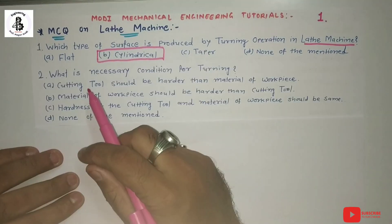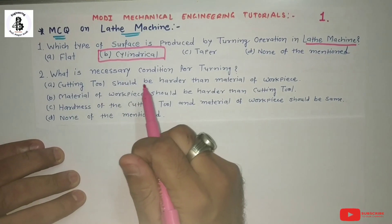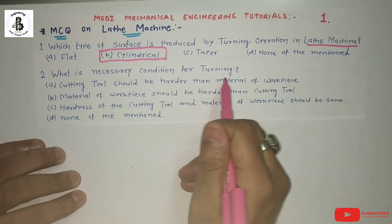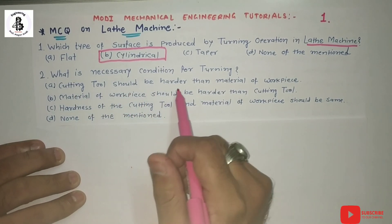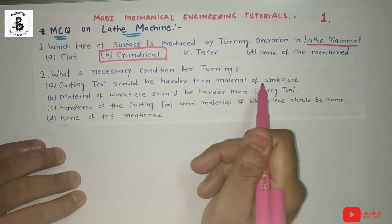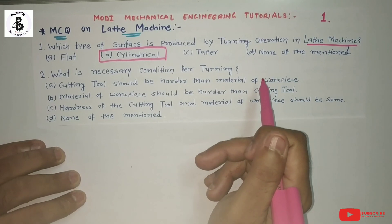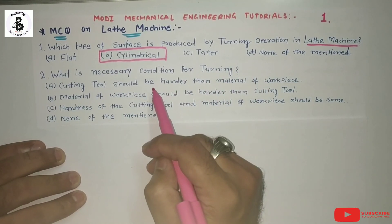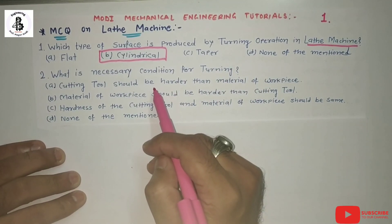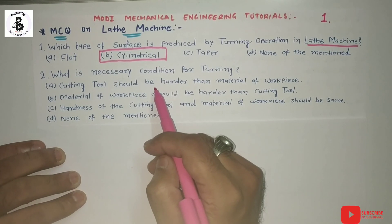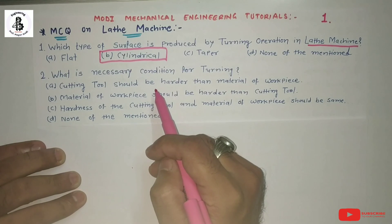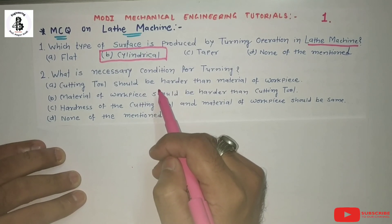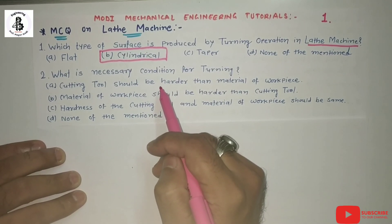The next question: what is the necessary condition for turning? Option A: the cutting tool should be harder than the material of the workpiece. That will be the necessary condition in any metal cutting operation. In any turning operation, the tool material must be harder than the workpiece material, so that the tool has the ability to cut the material.